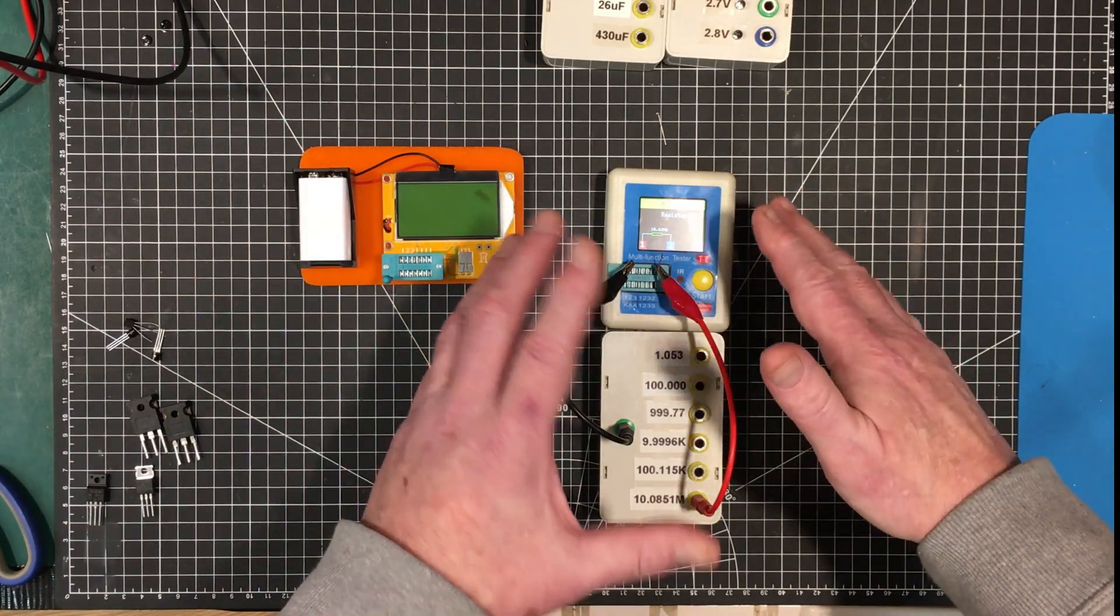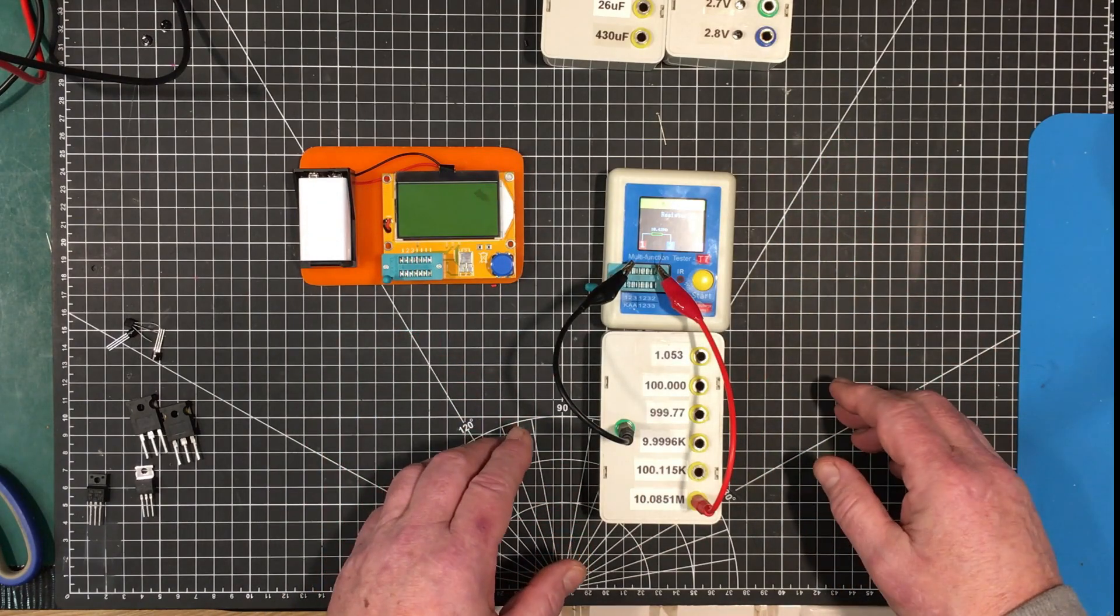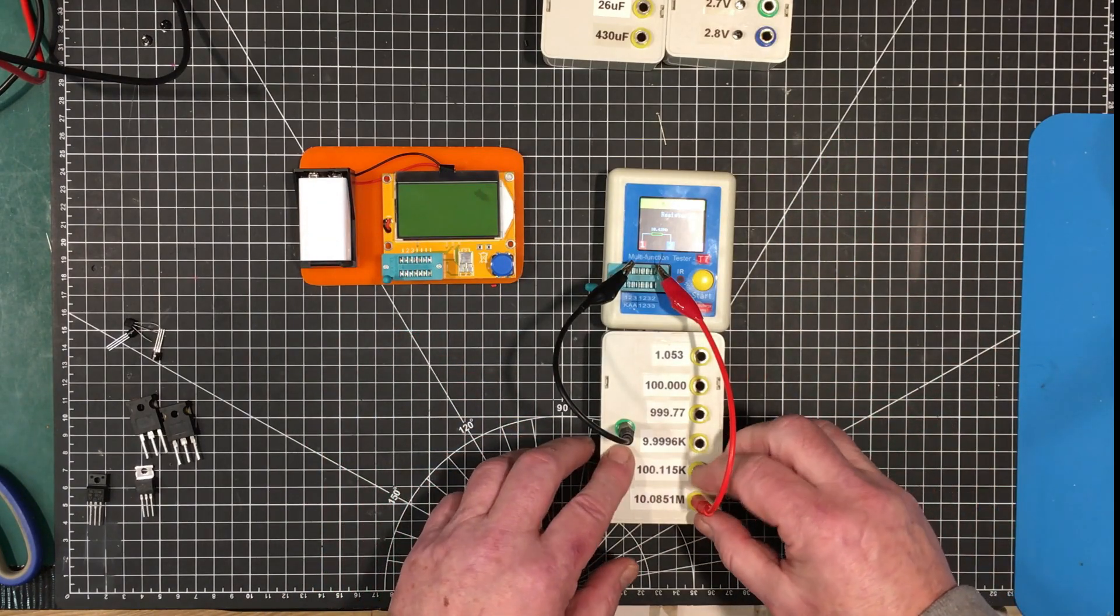So it's more accurate than this. This was in the 10% region. This is the 1 to 6% region. So this is a more accurate device so far.